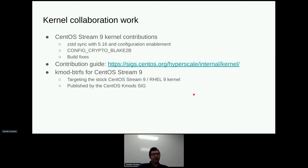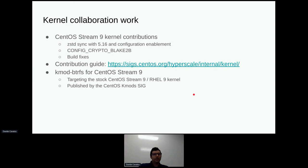So far we helped resync the Zstandard stack to 5.16, and we also added support for CryptoBlake2B, which was a prerequisite for Btrfs. We've also contributed some build fixes. In the future, we hope to contribute fixes to more subsystems and help maintain parts of these kernels. I should also mention that in parallel, the KMOD SIG is producing standalone KMODs for Btrfs that can be used with the stock RHEL kernel. So if you're using the stock CentOS Stream 9 or RHEL kernel, you can use KMOD Btrfs from the KMOD SIG, which is a great example of collaboration between SIGs.